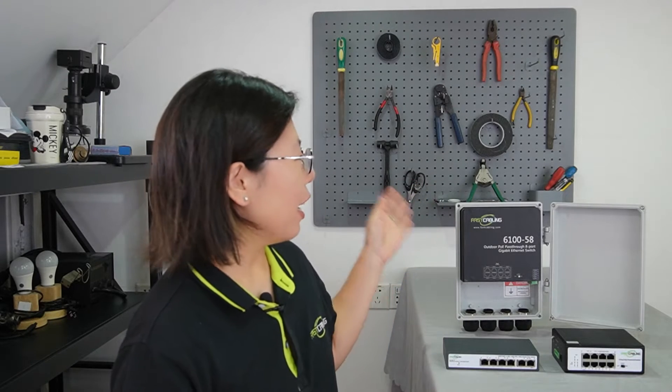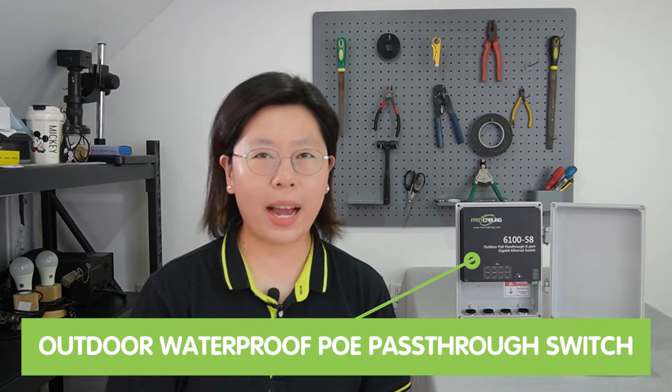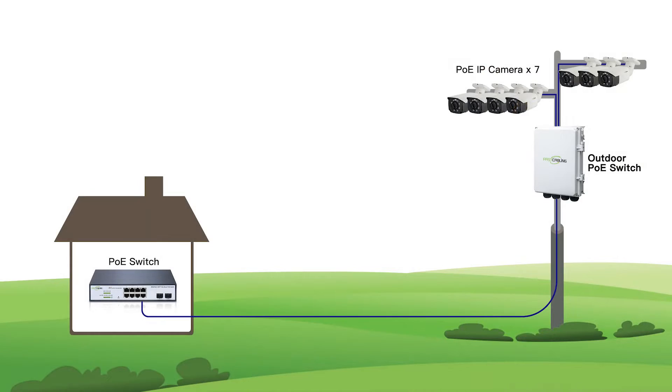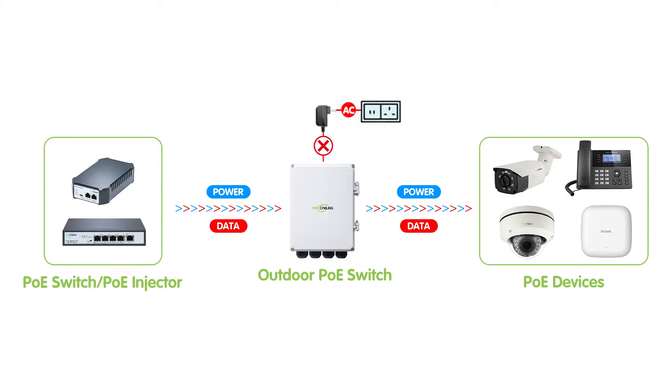Behind me we have the outdoor waterproof PoE passthrough switch. It is an extremely reliable networking system for outdoor applications with highly flexibility on installation. You can use existing cabling or network to provide power and data to 7 devices with only one cable run between the main network and the PoE passthrough switch. It has a total power budget of 95W and power output up to 30W per port. You can receive power from an 802.3 BT PoE injector or switch — no need for a power source present at the edge.